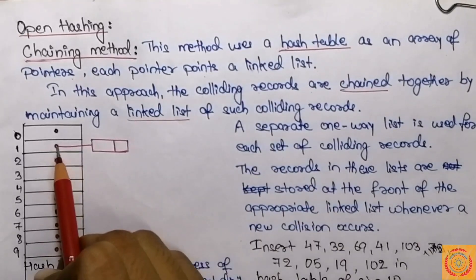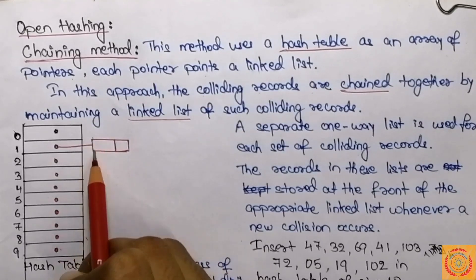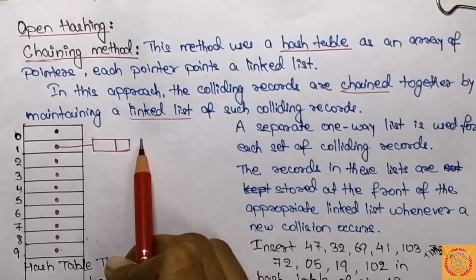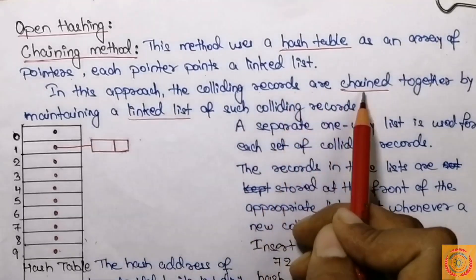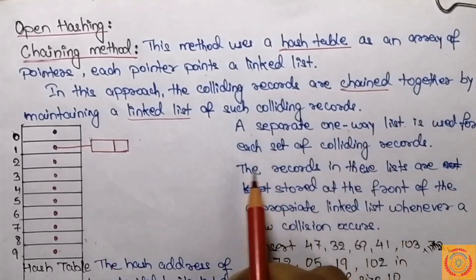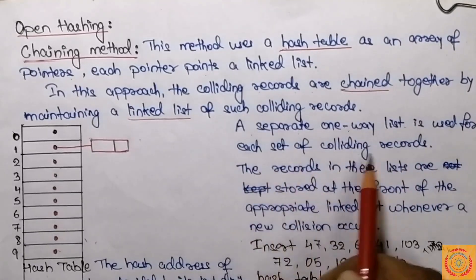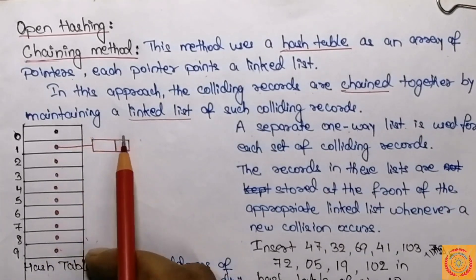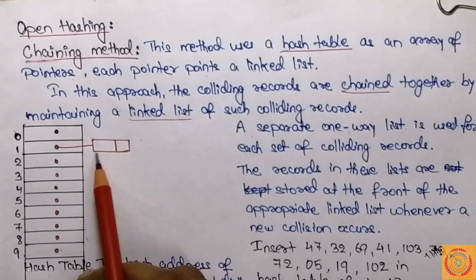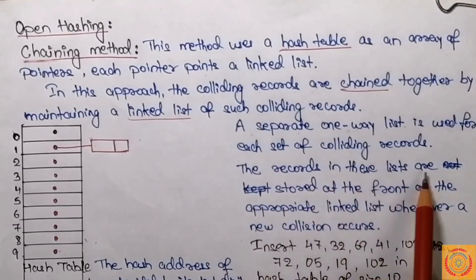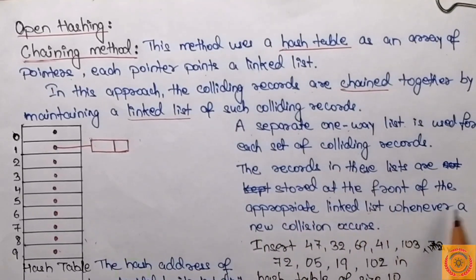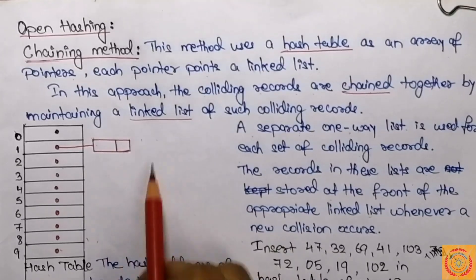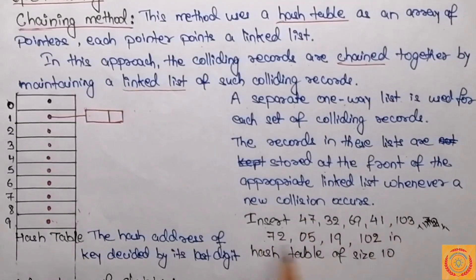For example, at index 1, if we are getting colliding records, the first record will be stored in the linked list at index 1, then it will be chained to another node containing the next colliding record, and so on. A separate one-way list is used for each set of colliding records — index 0 has its own list, index 1 has its own list, and so on. The records in these lists are stored at the front of the appropriate linked list whenever a new collision occurs.